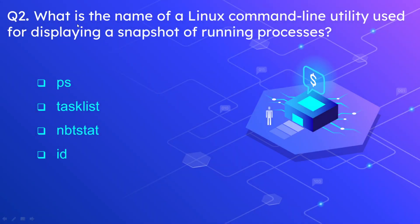Question number 2: What is the name of a Linux command line utility used for displaying a snapshot of running processes? The options are ps, tasklist, nbtstat, and id. The correct option is ps. The ps command displays the running processes on the Linux operating system.